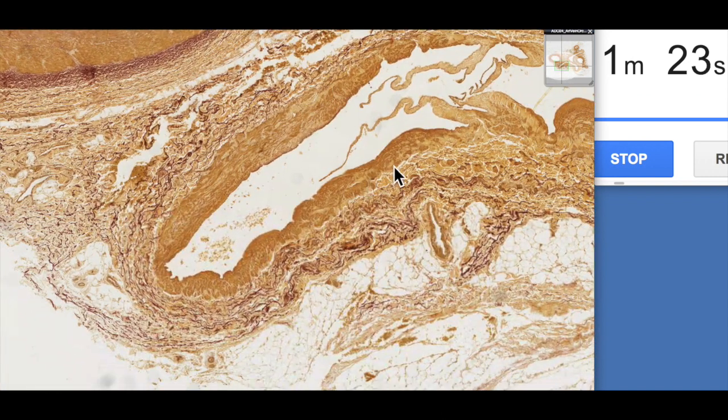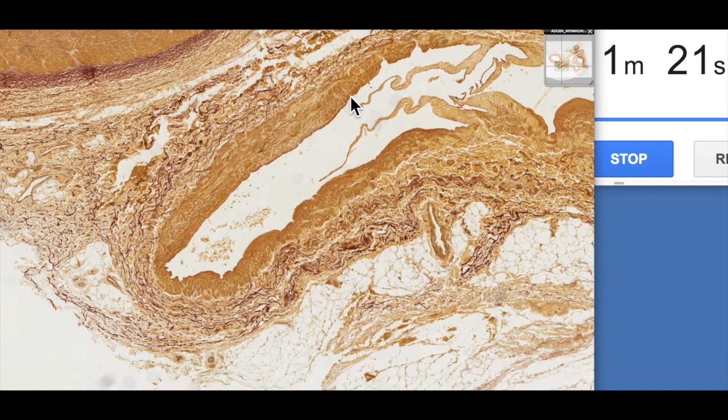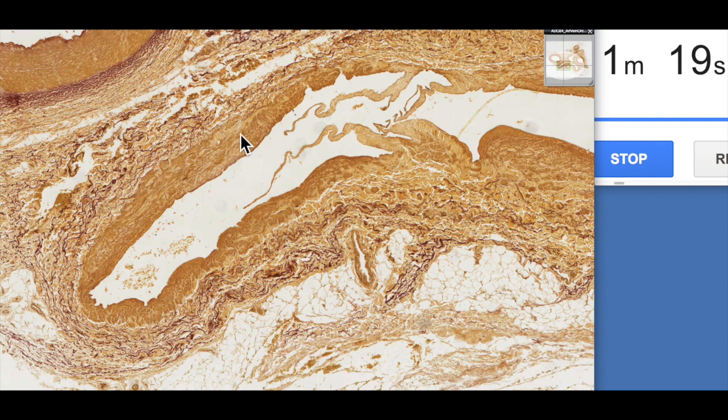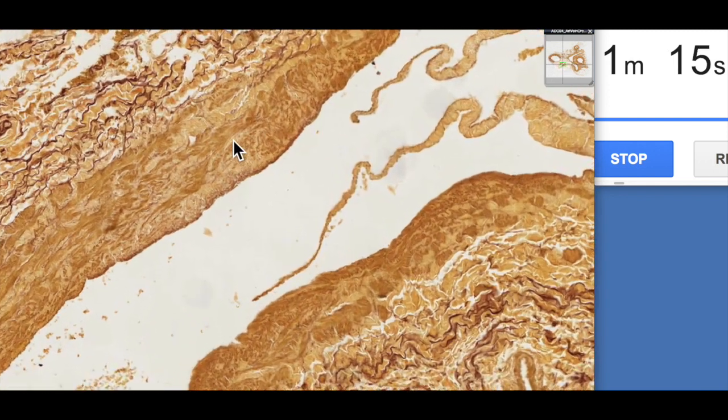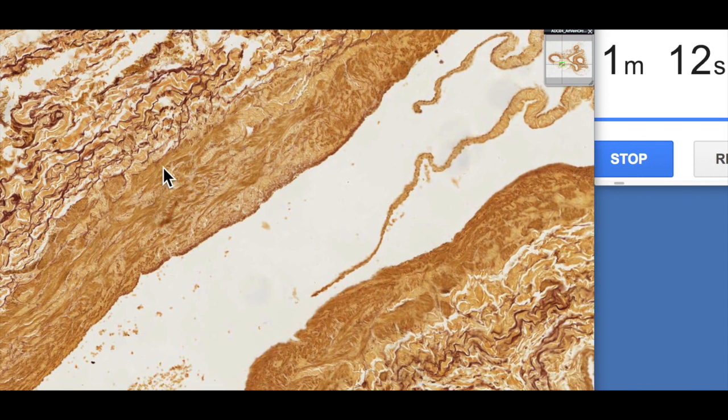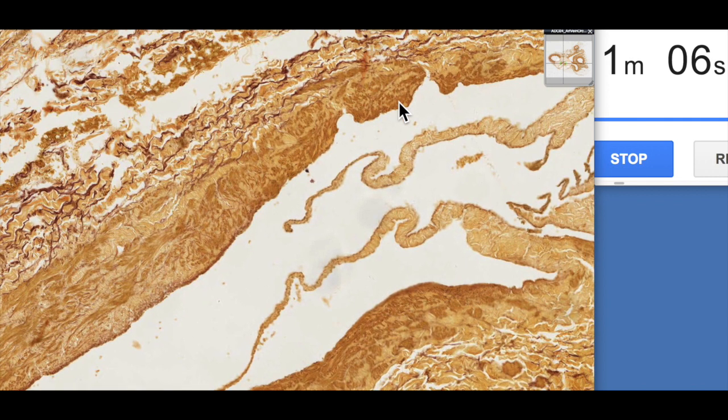If we go out here to the vein, we can actually see it's very irregular in shape. There's not a lot of thickness to its wall. We zoom in a little bit. We can see this sort of irregularly dispersed smooth muscle here. There's not that internal elastic lamellae like we saw with the muscular artery.